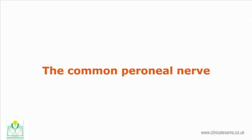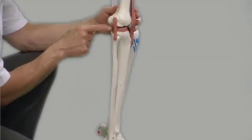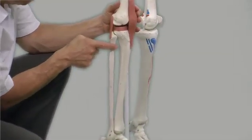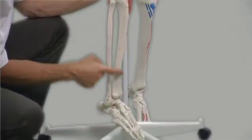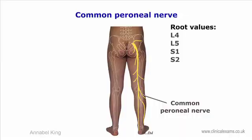The common peroneal nerve, also referred to as the common fibular nerve, travels around the head of the fibula and then divides into a superficial and a deep branch. Amongst others, it innervates the peroneus longus, peroneus brevis, and the extensor muscles of the foot.